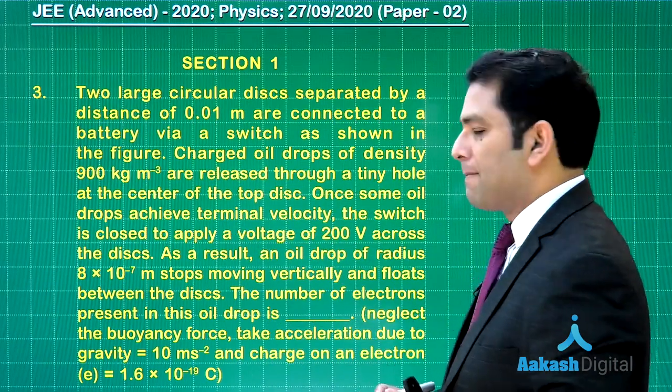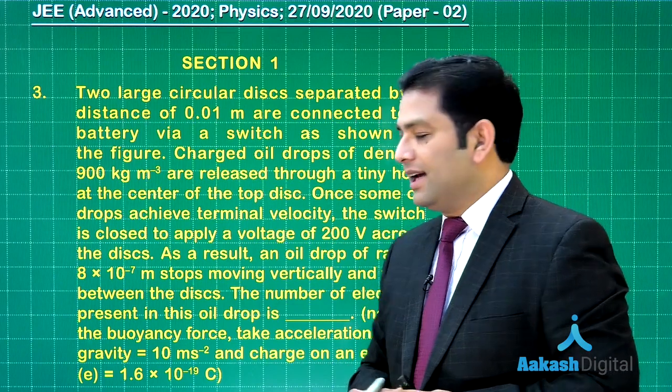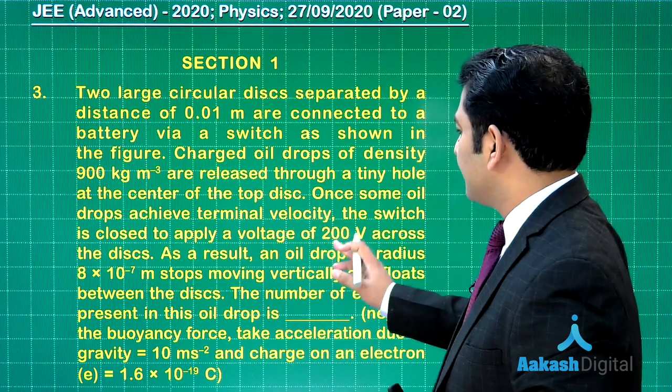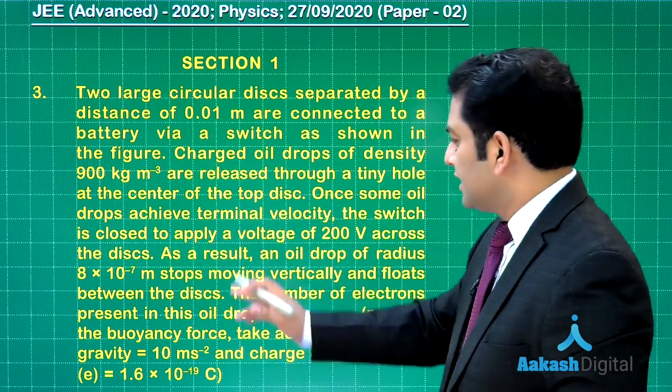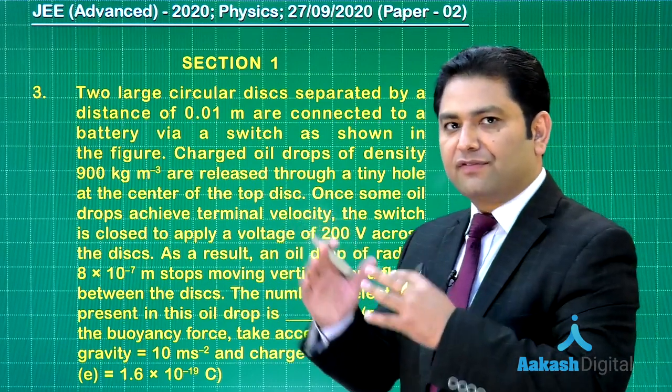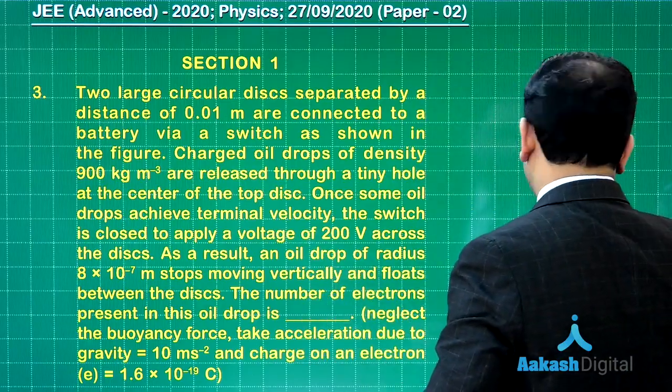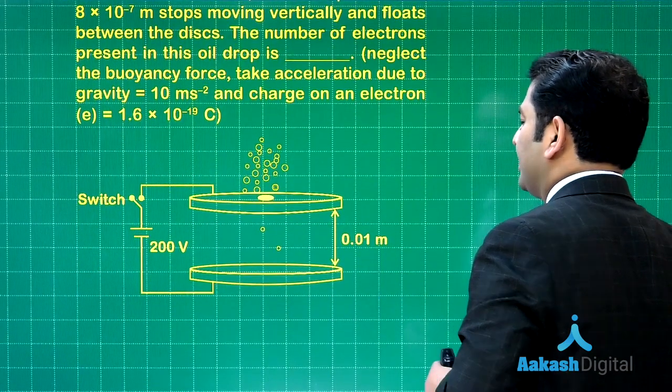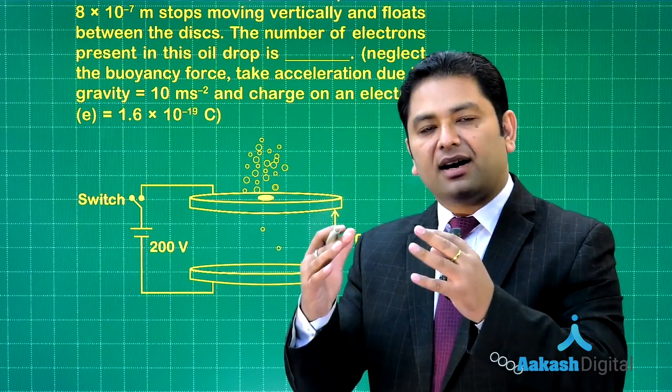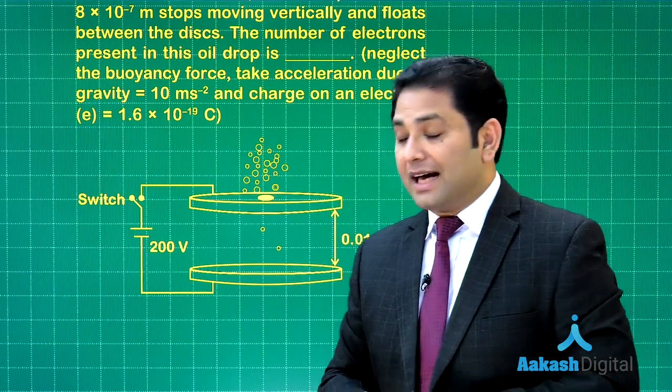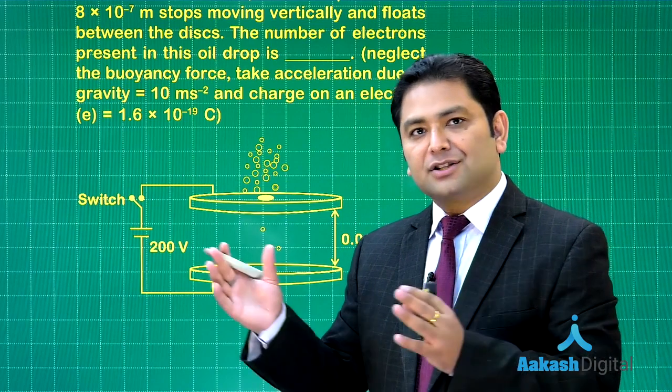Charged oil drops of this density are released through tiny holes at the center. This is very much related to Millikan's oil drop experiment. Once some oil drops achieve terminal velocity—initially moving and falling, then achieving terminal velocity—a potential difference of 200 volts is applied.